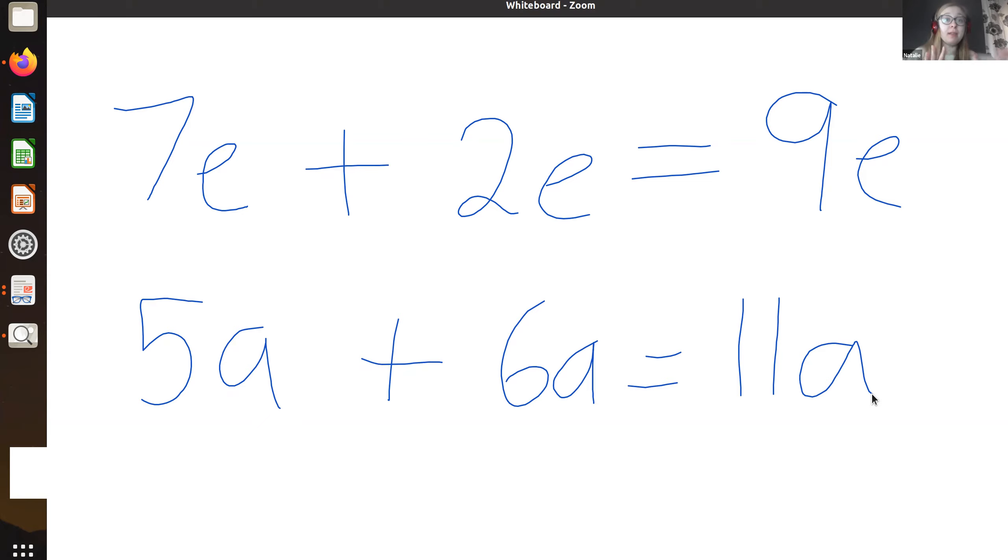Do you see how we're combining the letters? We just add the number bits together. And I think it helps to imagine that the letter stands for something. So that way, you remember, if I have 5 apples and I add 6 apples, then I have 11 apples in total. And that's how we combine letters in maths, in algebra.